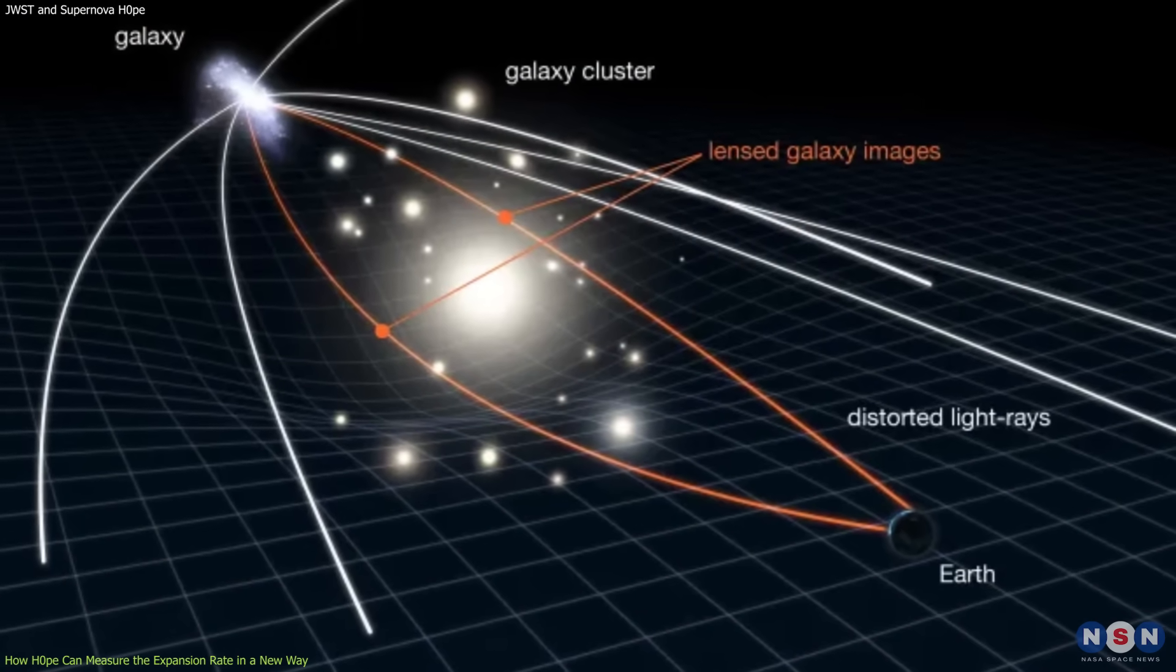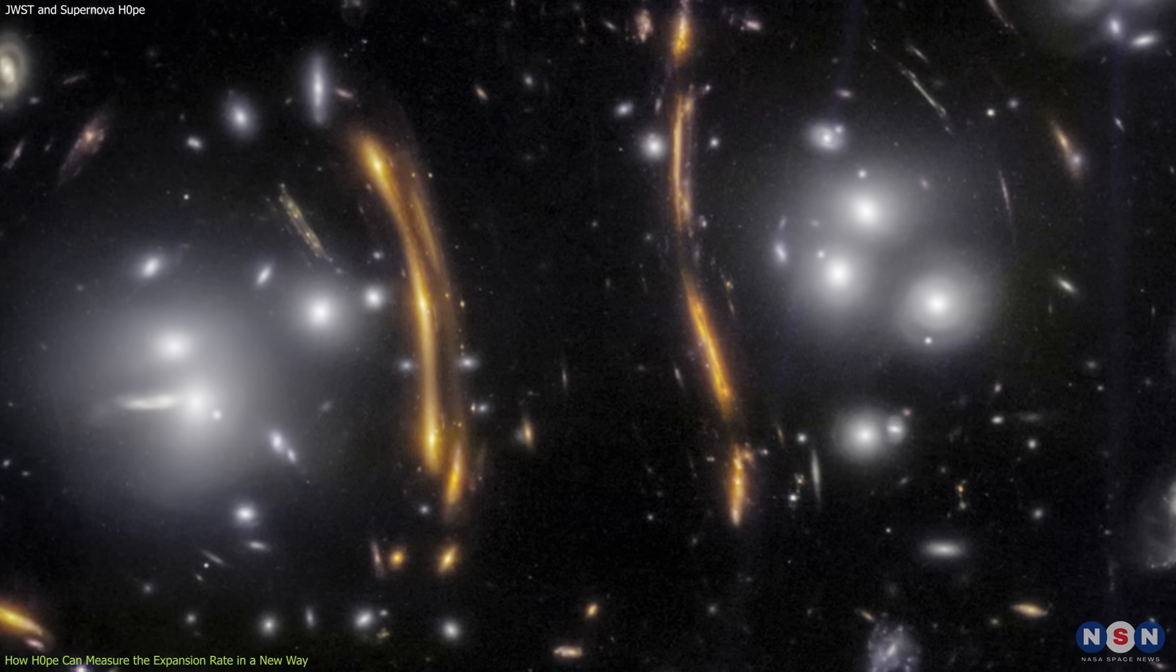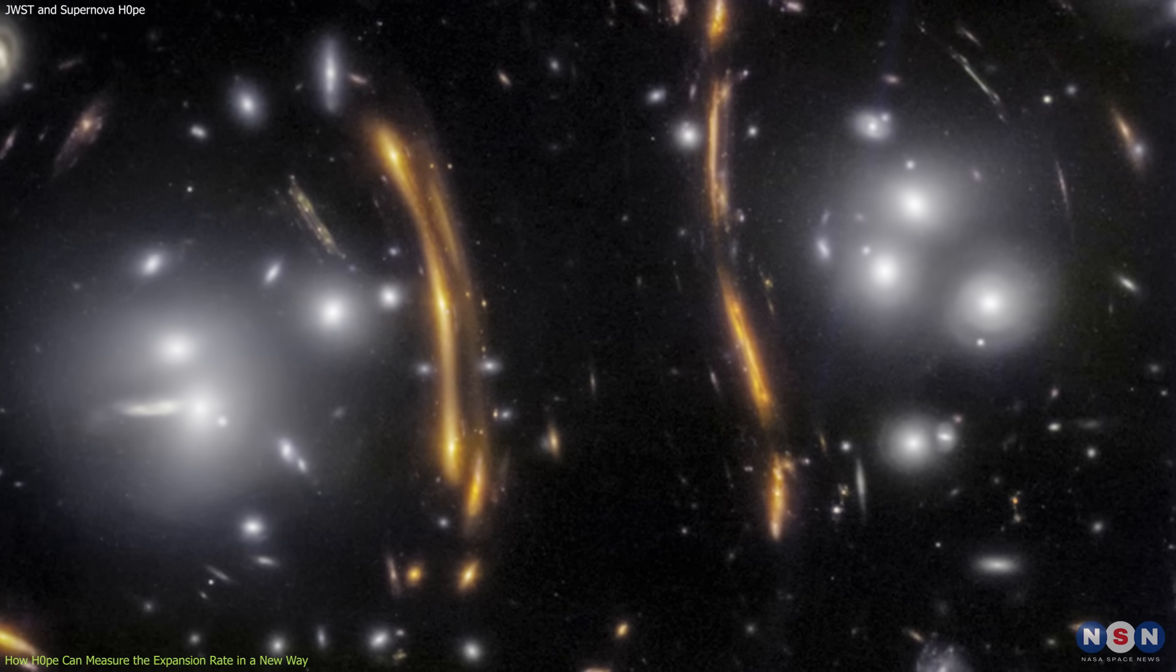This is where supernova H0P comes in. Because this supernova was gravitationally lensed by a galaxy cluster, it offers a unique opportunity to measure H0 in a new and independent way.